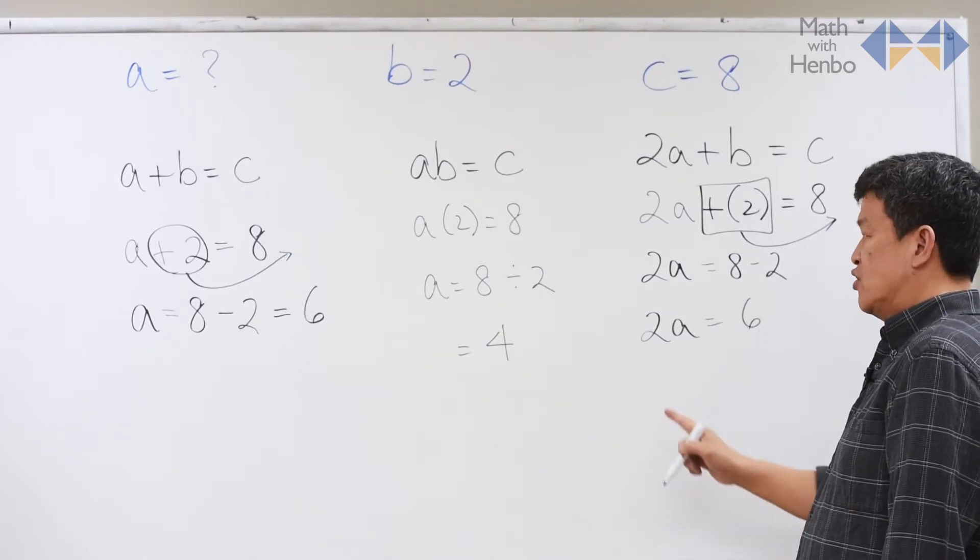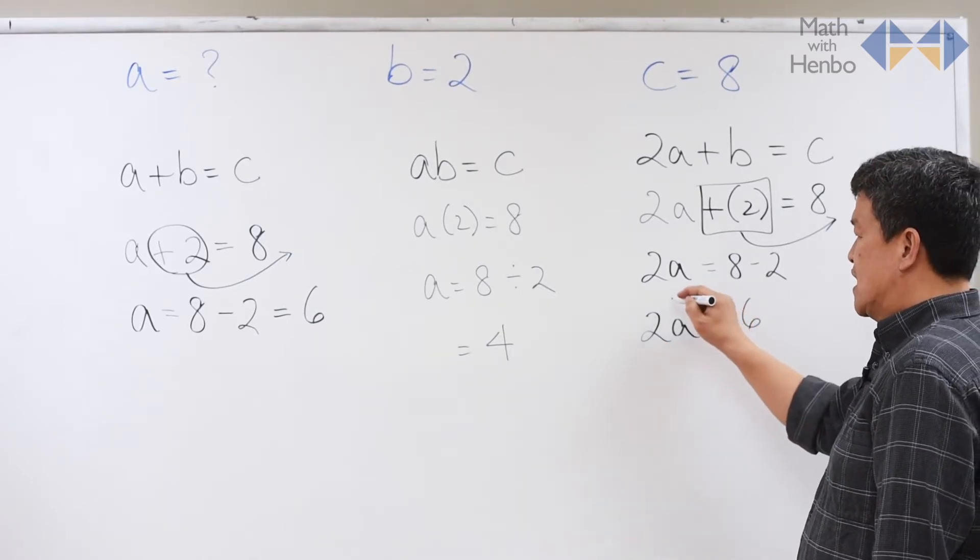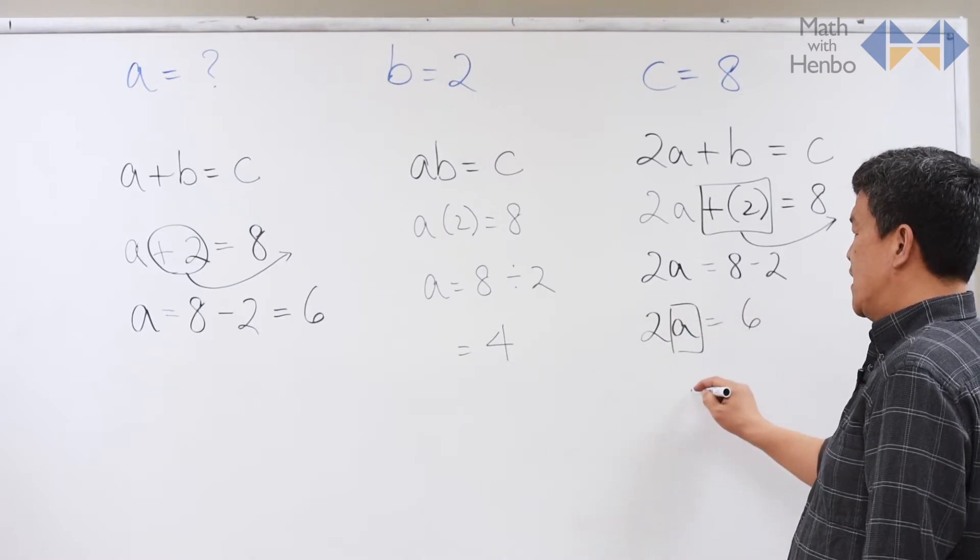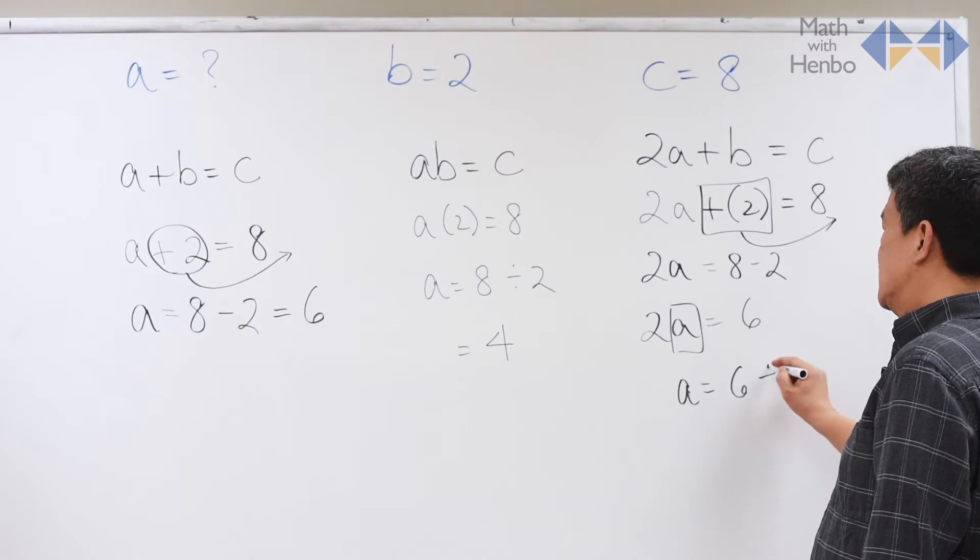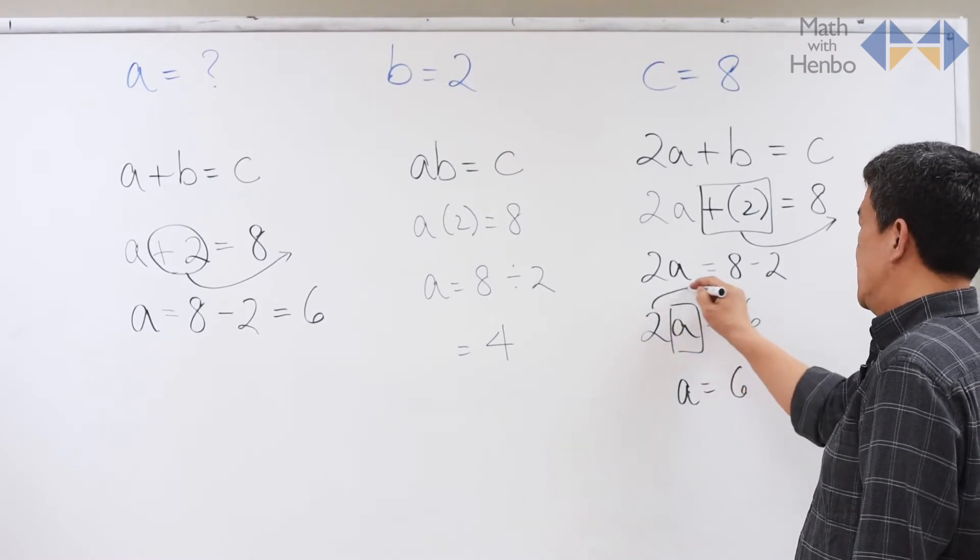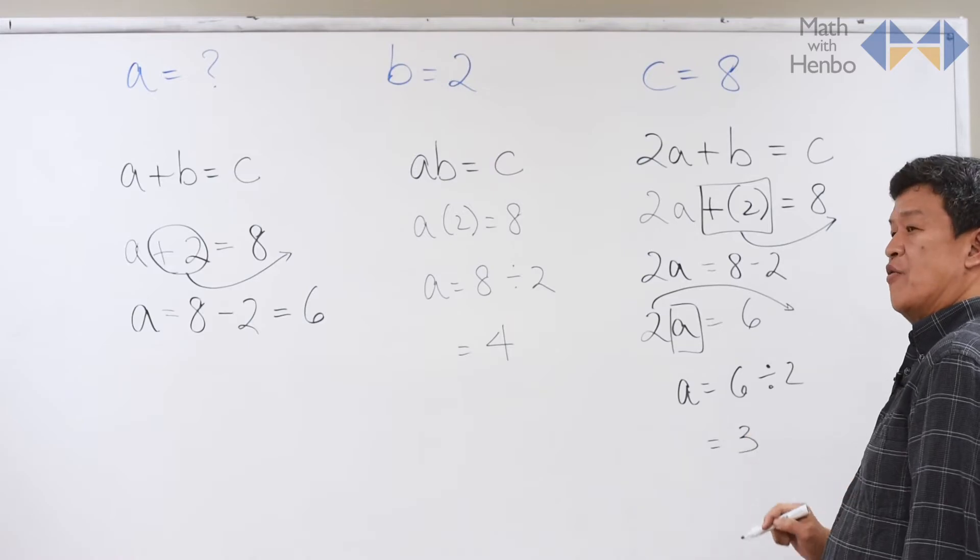At this point, 2A basically means 2 times A. That means now I could isolate A by itself by taking the 2 across. So A is equal to 6 divided by 2. So take this across to the other side, which becomes a 3.